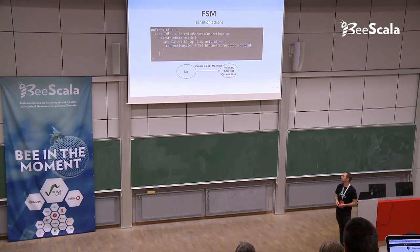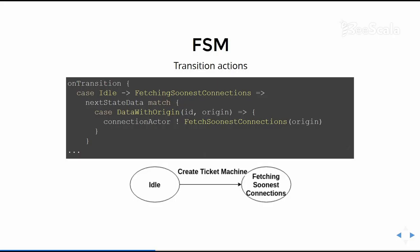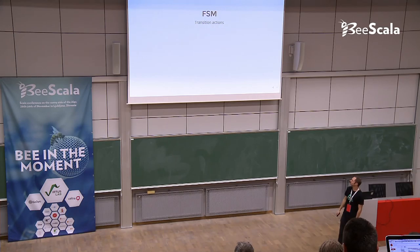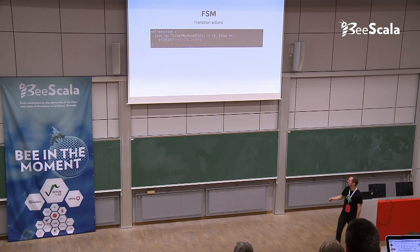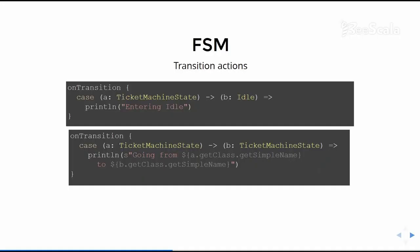We can also attach logic when doing a transition from one state to another. Here we can see a handler that is fired when you go from Idle to Fetching Soonest Connections — we ask the connection actor to get us the soonest connections from the origin. This is a nice feature because we don't care about the specific event triggering the transition. We can also have a handler fired when going from any state to Idle, or a handler fired whenever we make any transition from any state to any state — here I'm using it just for logging the transition.